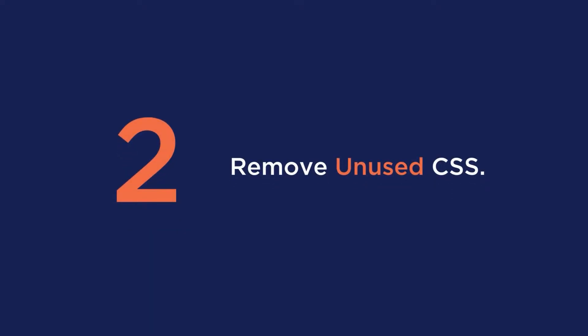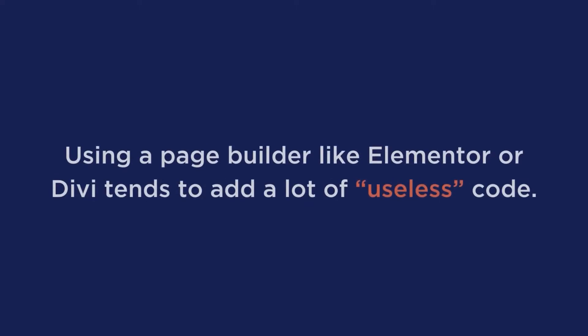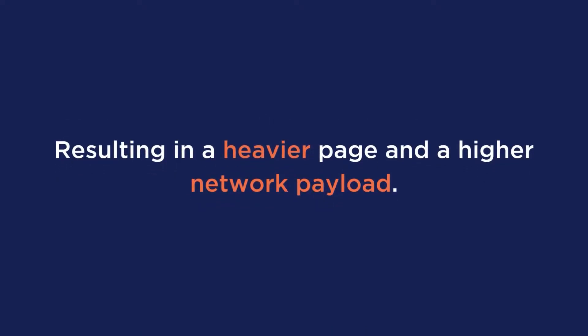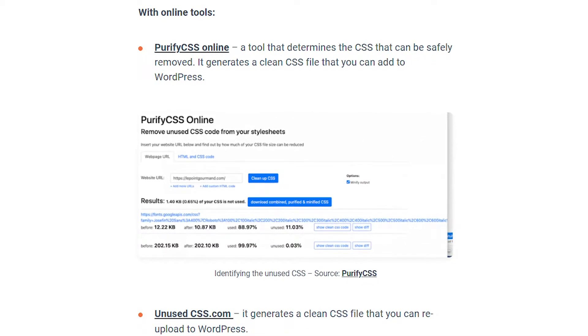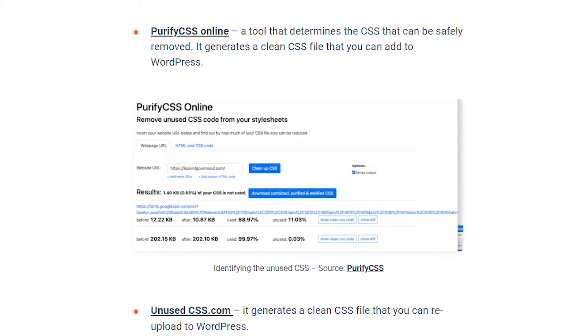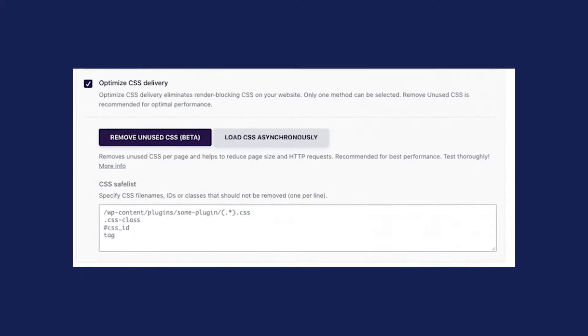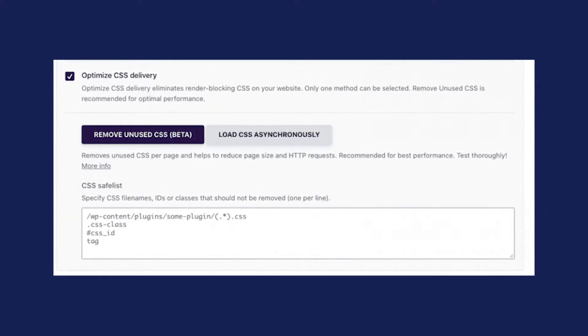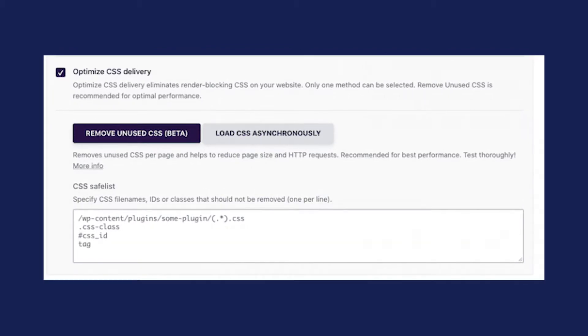Second is to remove unused CSS. You should prevent unused CSS from loading on your website as it's not needed. If you're using a page builder like Elementor or Divi, they tend to add a lot of useless code, which results in a heavier page and a higher network payload. For the easiest, headache-free solution, WP Rocket can remove unused CSS in just one click.